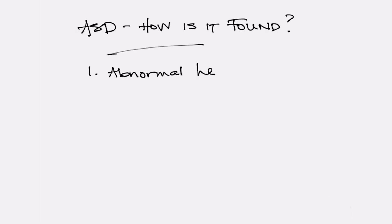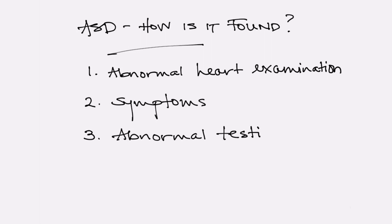How is an atrial septal defect found? A number of different ways. It may be an abnormal heart examination with an abnormal heart sound or a murmur heard on physical examination. Symptoms such as breathlessness, fatigue, abnormal heart rhythms, or even a stroke-like spell, or sometimes an abnormal cardiology test such as an electrocardiogram, chest x-ray, echocardiogram, CAT scan, MRI, or even heart catheterization may be the first way to identify an atrial septal defect.